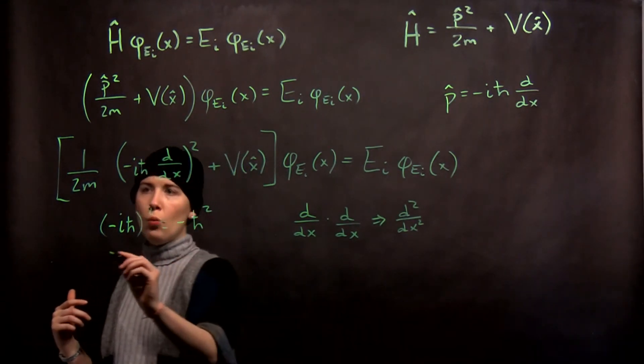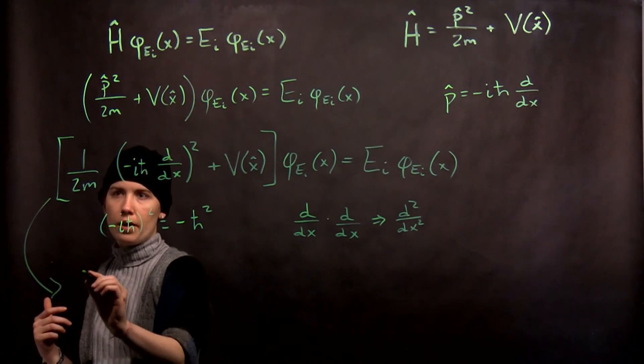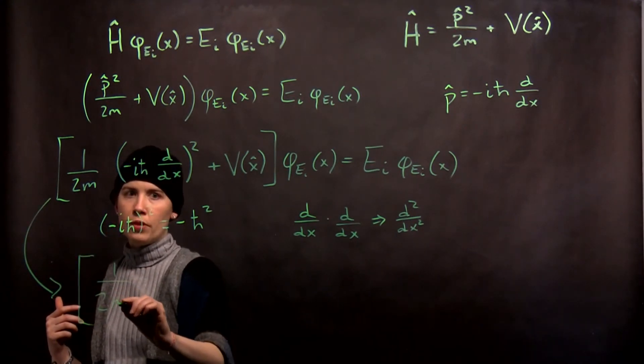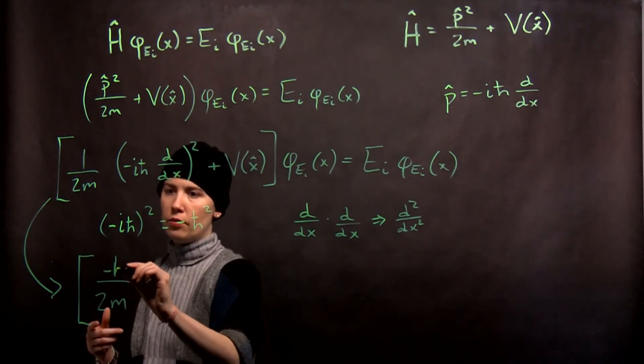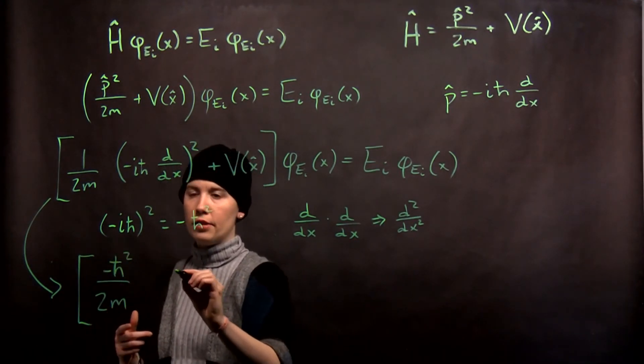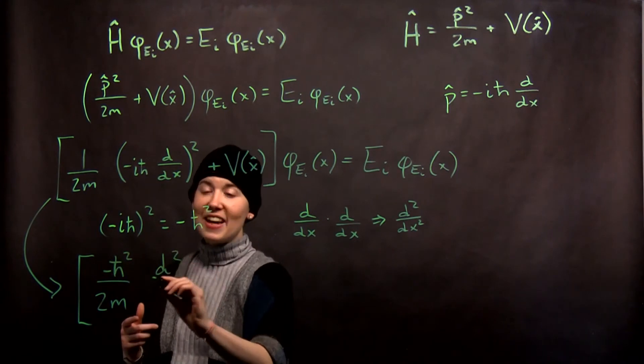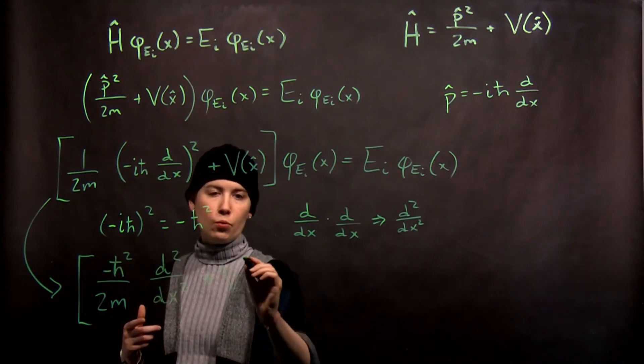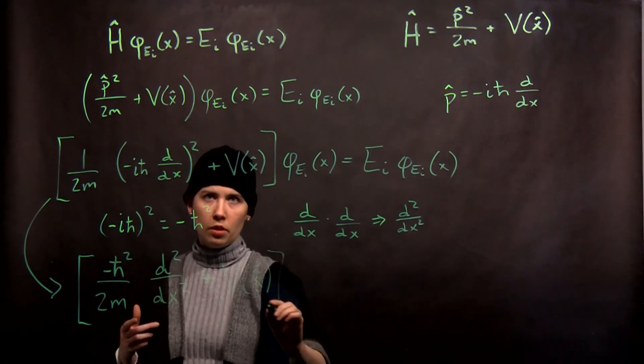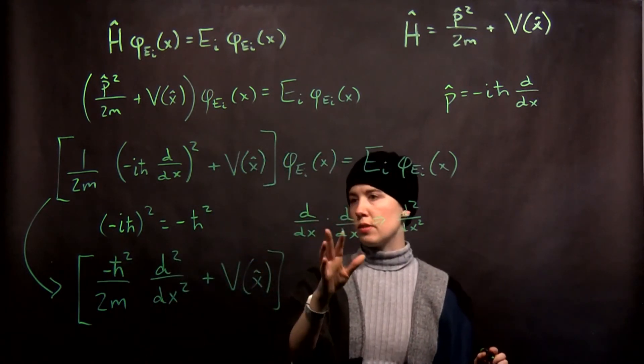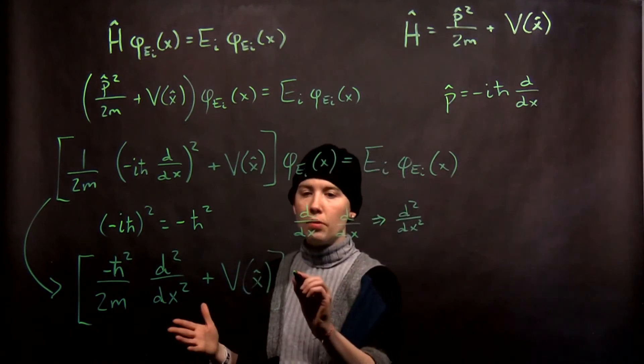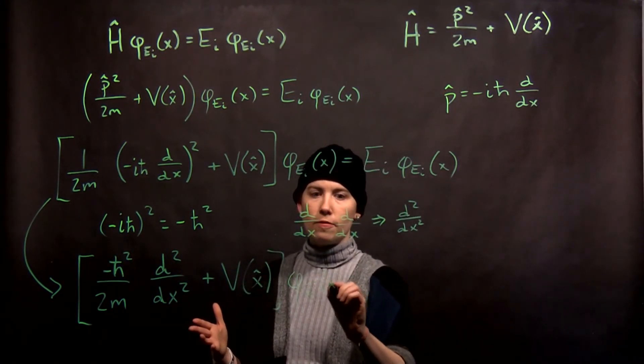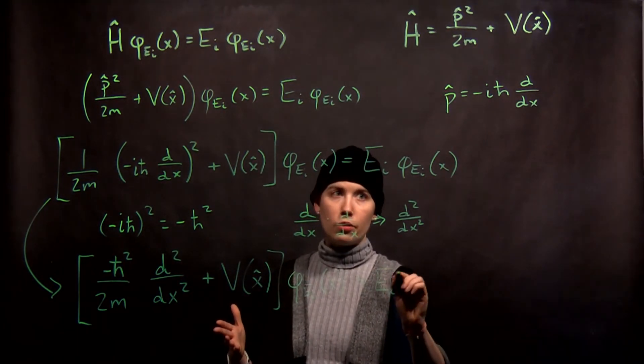So what we're left with now, as I come down to this final line, we have 1 over 2m, and I'm in fact going to make that negative h bar squared, and then I have my second derivative with respect to position, plus whatever my potential energy term is, which will vary with what my quantum system is, and then that is applied to these special energy eigenfunctions, which each correspond to some energy.